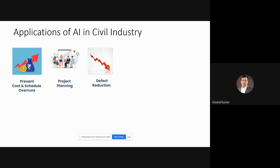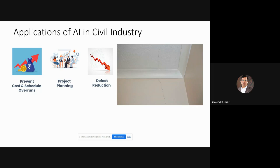If you've built a shopping mall and there are hairline cracks in the wall, people will not like it. Today, images of cracks are fed into AI systems which can identify the defects — not every crack is visible to the human eye. That is the power of AI. This is based on image processing, which we call computer vision.